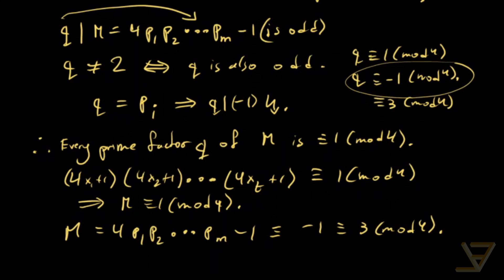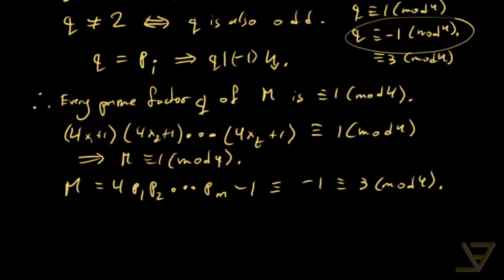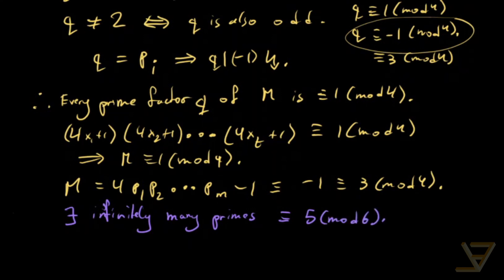So this is impossible, and there exist infinitely many primes that are congruent to 3 mod 4. And as a challenge, you can prove that there exist infinitely many primes congruent to 5 mod 6. The same technique will work in that case. Thanks for watching, and I'll see you next time.